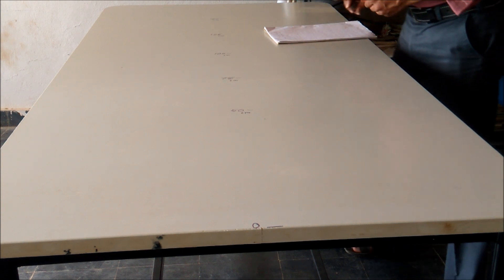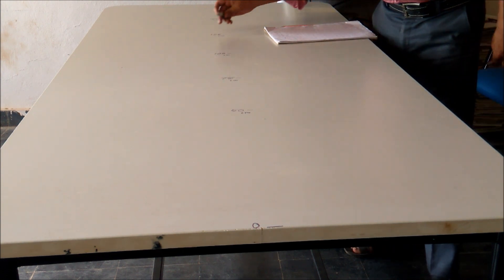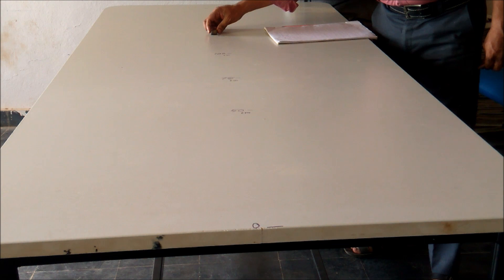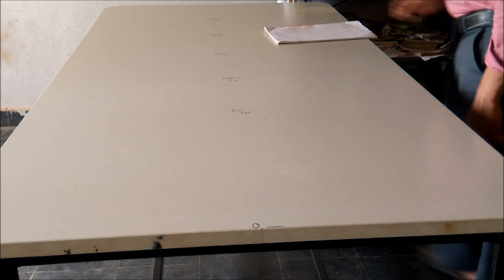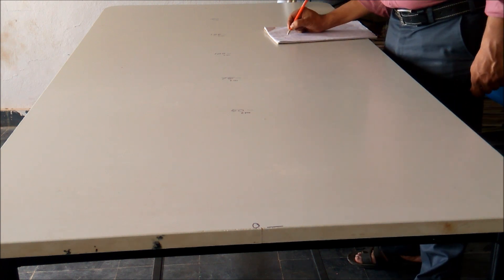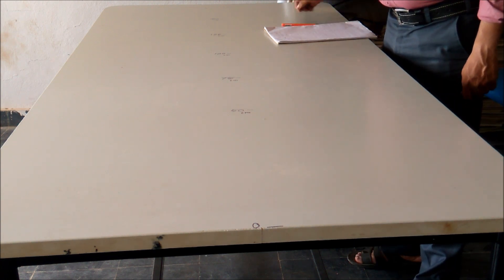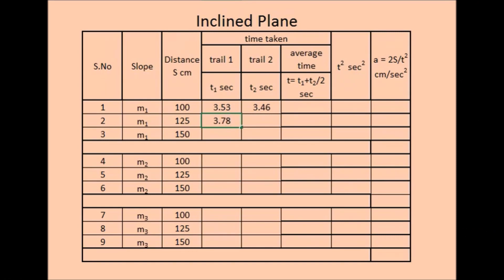For 125 cm, the times are noted. Trial 1 over, now the trial 2. From 125 mark, I am releasing this cylinder. So with the help of another mobile stopwatch, I am noting the time taken. These two values, t1 and t2 values are entered into the table.